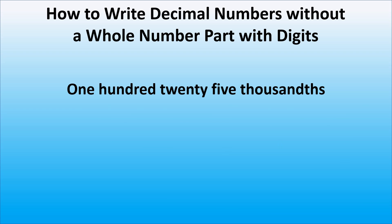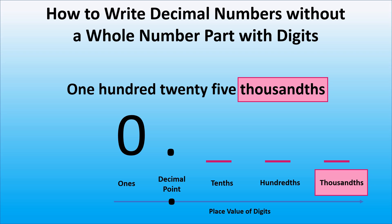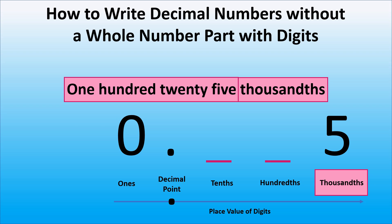Now let's see how we can write one hundred twenty-five thousandths using digits. As we don't have a whole number part, we will write zero followed by a decimal point. We know that thousandths means that we need to have three digits to the right of the decimal point. So we will write the digit five in the thousandth place, the digit two in the hundredth place, and the digit one in the tenth place.